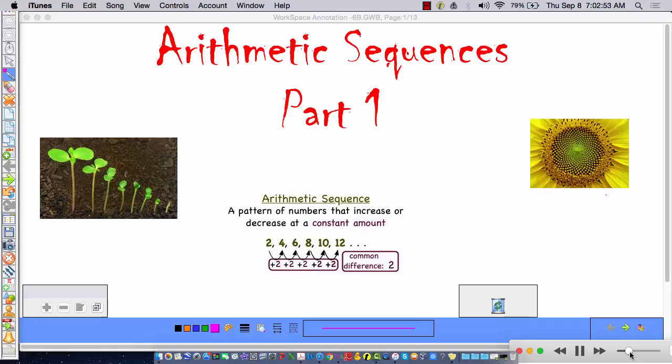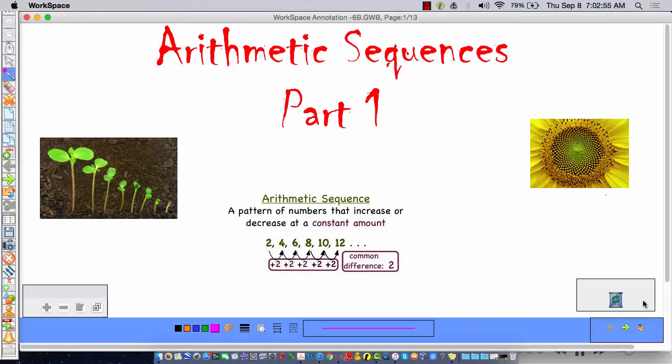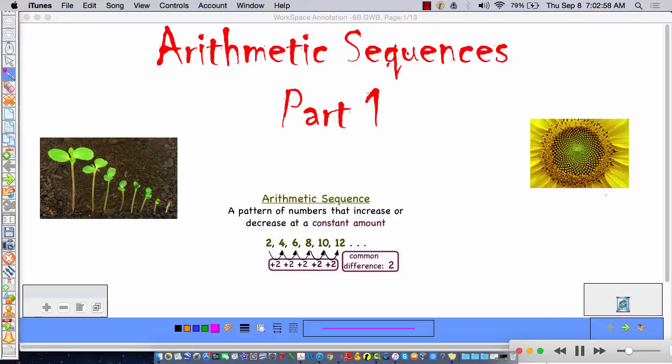Part 1, we might get through the whole thing today, not sure, we'll see how it goes. Let's get to it, shall we? A sequence of numbers. Here's a sequence of numbers: 2, 4, 6, 8, 10, 12. Could be any set of numbers in a row. This particular sequence goes on forever, as indicated by these three dots. And the sequence is generated just by adding 2 to the previous term, and we say that the common difference is 2. More on that later.